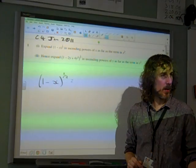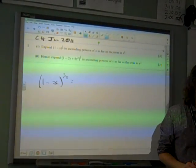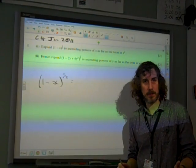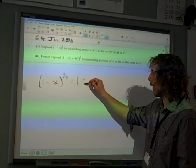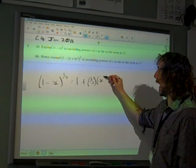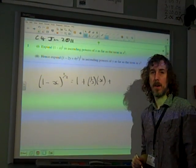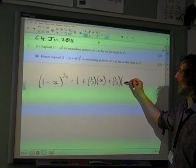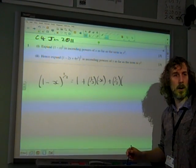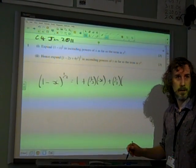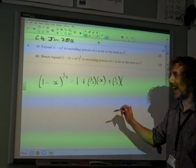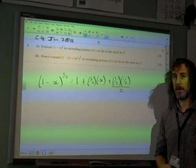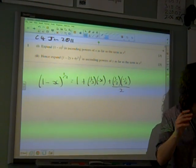Let's use the formula. It's in the formula book, isn't it? It goes 1 plus x to the n is 1 plus n times x. So we could do 1 plus n times x plus n times n minus 1. Now, what's the half minus 1? Yeah, such a difficult question.